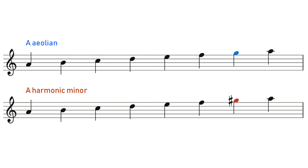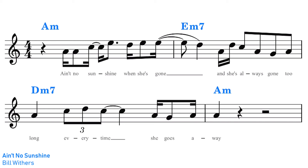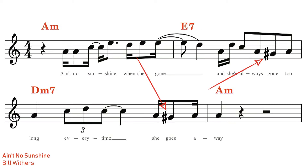Another method is to look for the 7th degree in the melody and see if it's the natural, unaltered 7th degree of the natural minor, or the raised 7th degree of the harmonic minor. Here in Ain't No Sunshine, we can clearly see that the 7th degree of the scale is a G natural, so we can conclude that we're in the A natural minor scale. If this note was instead G sharp, then we would be in the harmonic minor.